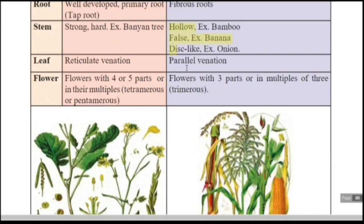For leaves: parallel venation occurs in monocots — for example, banana. If you observe the leaf of a banana, there is parallel venation. In dicotyledons, the characteristic is reticulate venation — a network-like structure formed by veins is called reticulate venation.